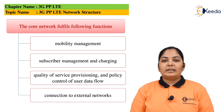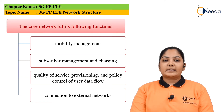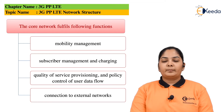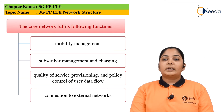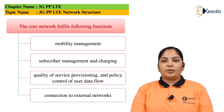The PDN Gateway is the connecting node between the user equipment and external networks. It is the entry point of data traffic for the user equipment. In order to access multiple PDNs, user equipment can connect to several PGWs (PDN Gateways) at the same time. The functions of the PGW include Policy Enforcement, Packet Filtering, Charging Support, and Packet Screening. Another important role of the PGW is to provide mobility between 3GPP and non-3GPP networks.